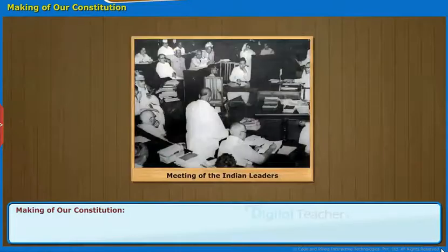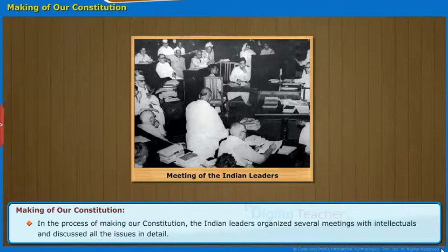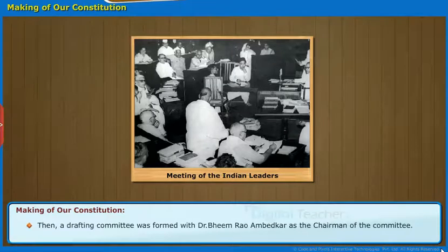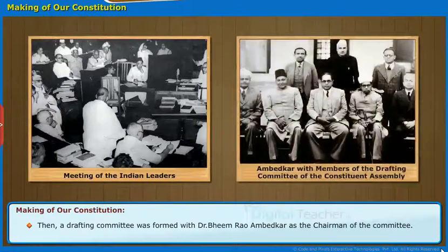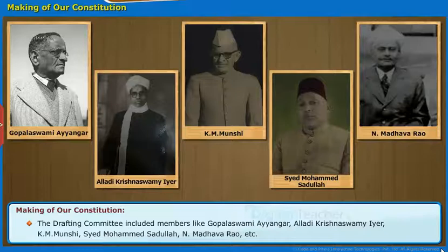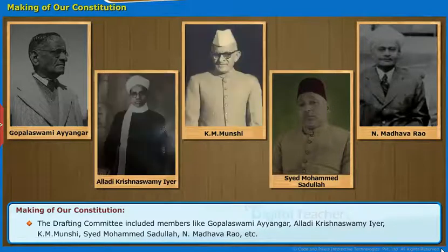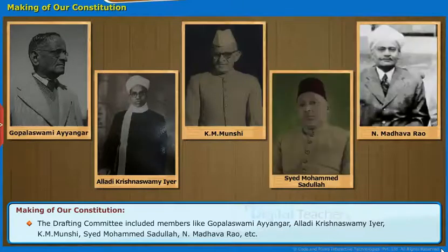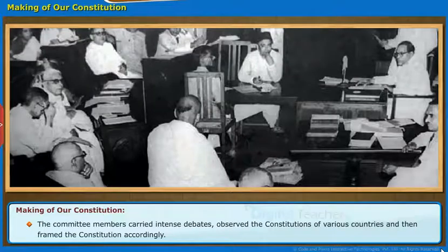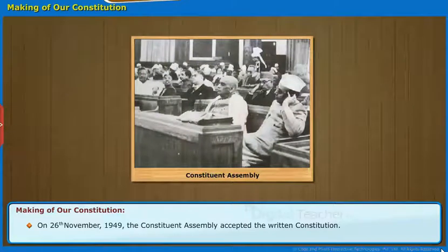We will now go through the making of our constitution. In the process of making our constitution, the Indian leaders organized several meetings with intellectuals and discussed all the issues in detail. Then, a drafting committee was formed with Dr. Bhimrao Ambedkar as the chairman of the committee. The drafting committee included members like Gopalaswamy Iyengar, Alladi Krishnaswamy Iyer, K.M. Munshi, Syed Mohamed Sadulla, N. Madhav Rao, etc. The committee members carried intense debates, observed the constitutions of various countries, and then framed the constitution accordingly. On 26th November 1949, the Constituent Assembly accepted the written constitution.